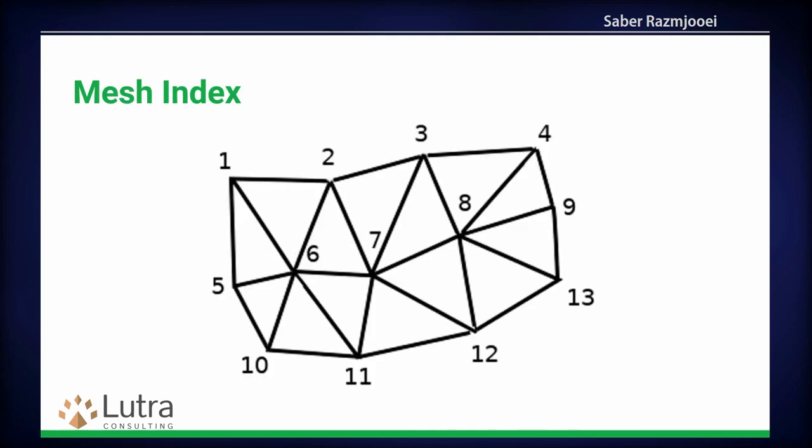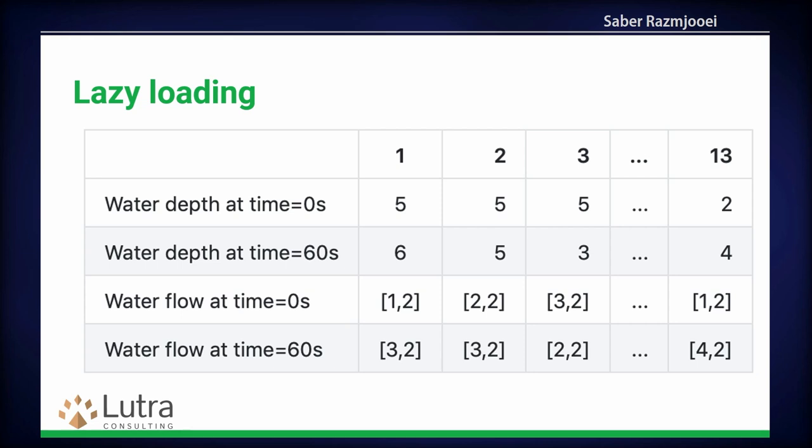In addition to that, MDAL also indexes the data, so it helps for fast loading. It has lazy loading — mesh data can contain quite a lot of time series, so it indexes the data both spatially, and when you load it in QGIS, it only looks at the specific time step you are interested in.